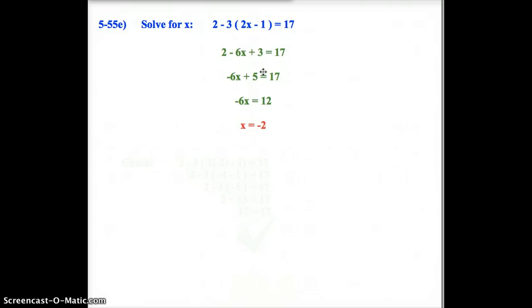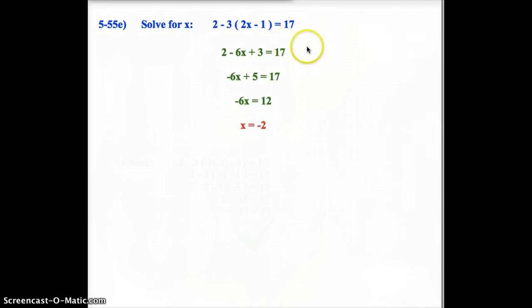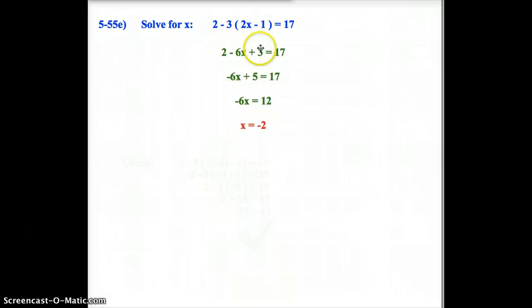As we click to find out what we're doing on those, you'll notice that I first distributed the negative 3 to the 2x to get negative 6x. And the negative 3 times negative 1 to get positive 3. That was my first step. Second step is I combine like terms both on the left side when I can. So I've got a positive 2, a positive 3. Together that makes positive 5.